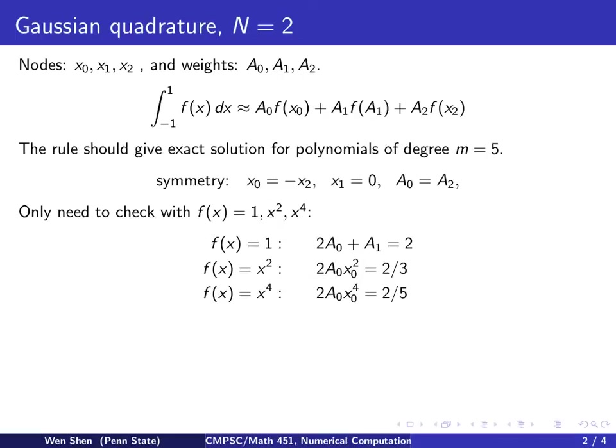Now we see we have three equations for three unknowns. The reduced unknowns are x0 and A0 and A1, so three of them. And we can easily see we can solve it.